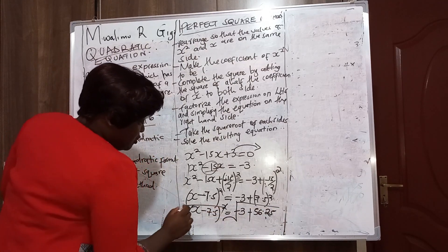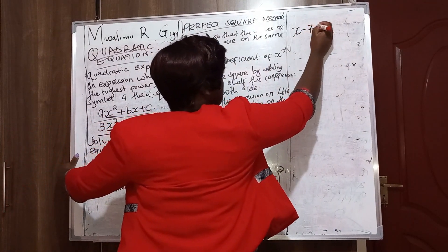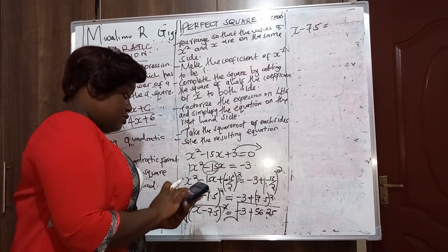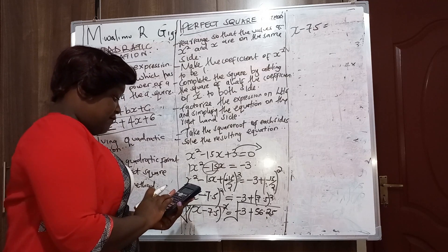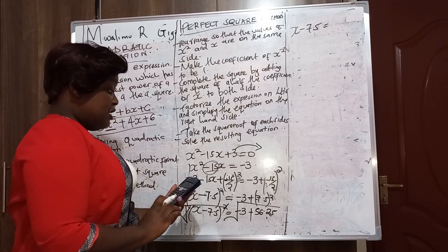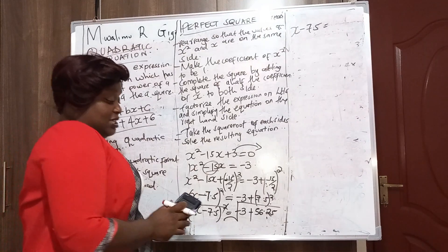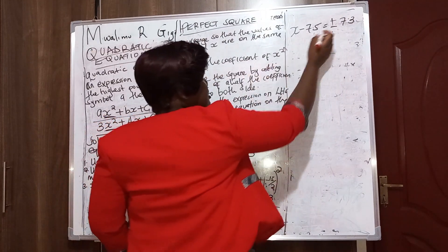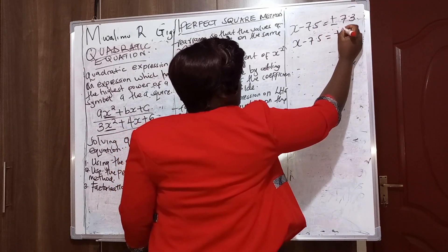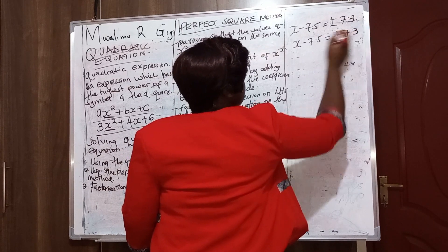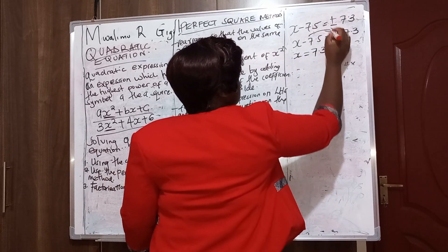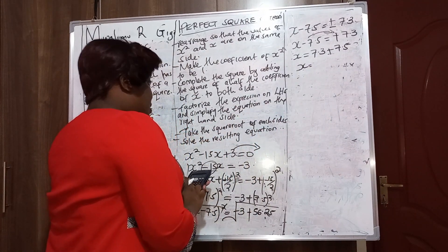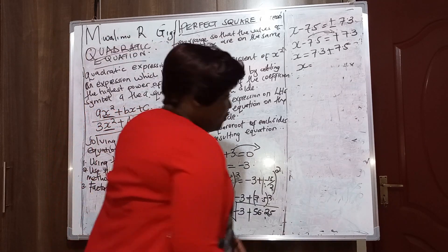We find the square root of both sides. The square cancels, so x − 7.5 = ±√53.25. The square root of 53.25 is approximately 7.29, which we can say is ±7.3. So the first equation: x − 7.5 = +7.3, giving x = 7.3 + 7.5 = 14.8.